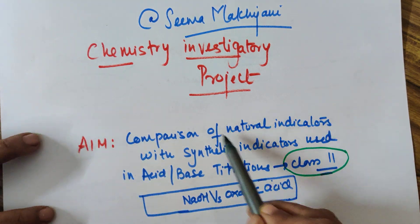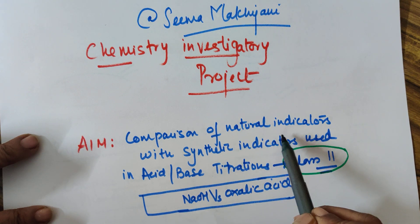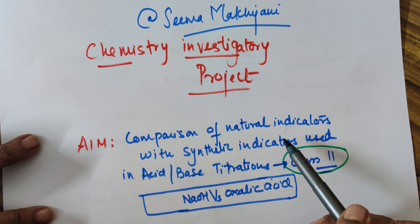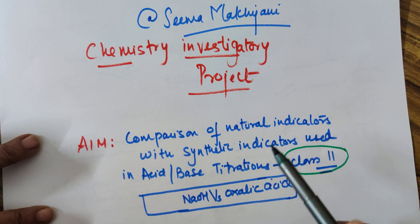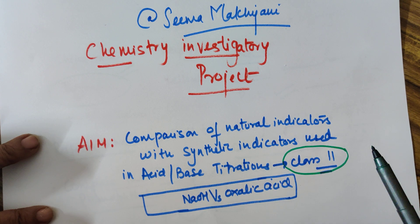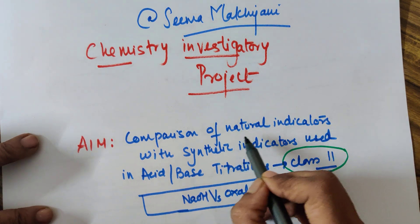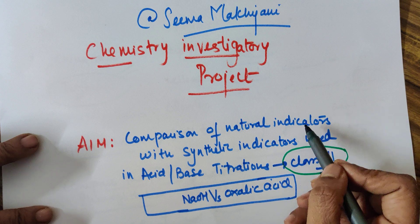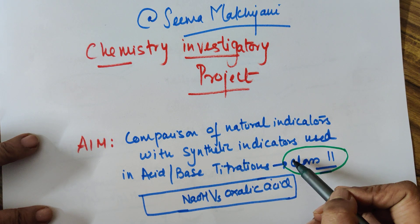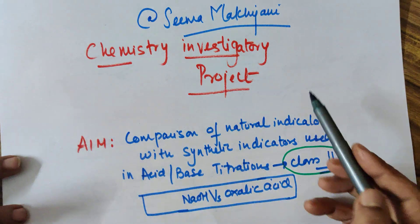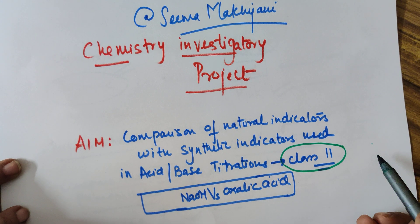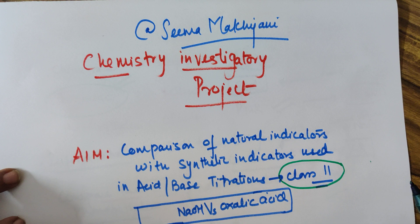The added advantage of this project is it can also go for biology because of the natural indicators you are using. Flowers as indicators can be used for biology and chemistry both. You can make a single project file, duplicate it, change the first two pages where you will have the different certificate and acknowledgment for your different teachers of chemistry and biology. You will have two duplicated reports: one for your bio examiner and one for your chemistry examiner. It is not necessary that you use all three natural indicators. You can even do it with two and compare it with the phenolphthalein. With this I end the first detailed investigatory project. Hope you are understanding it, doing well in life. Stay blessed, stay happy, start enjoying chemistry. Love you all, bye.